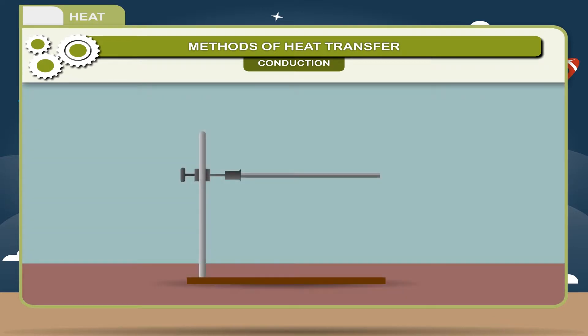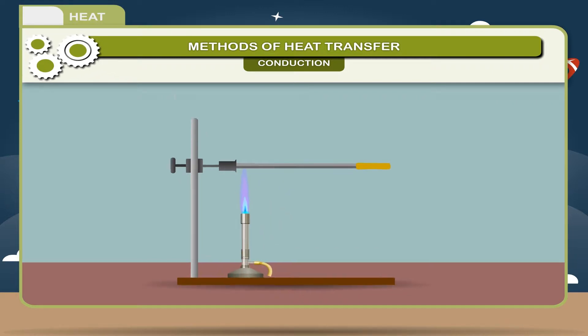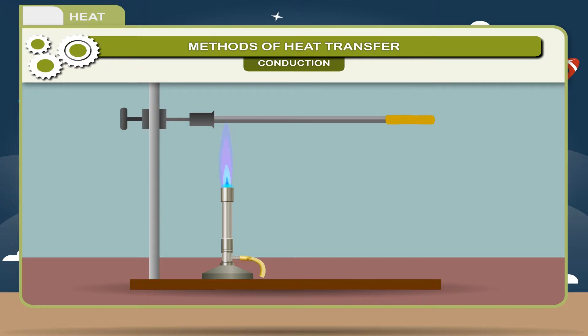Activity: Take an iron bar. Put some wax on its one end. Put the other end of the bar on the flame of a burner. After some time, you will observe that wax starts melting at the other end which was not heated. It means that the heat has reached to other end where wax was fixed.